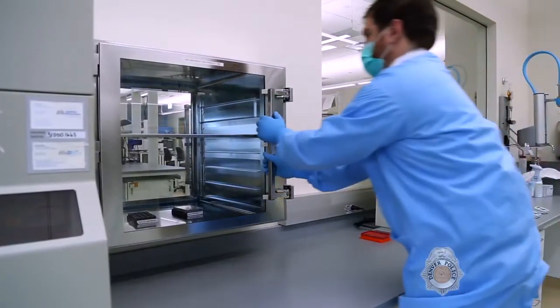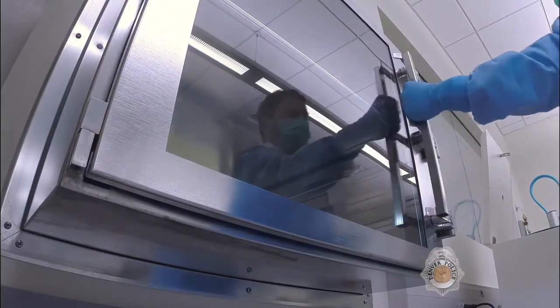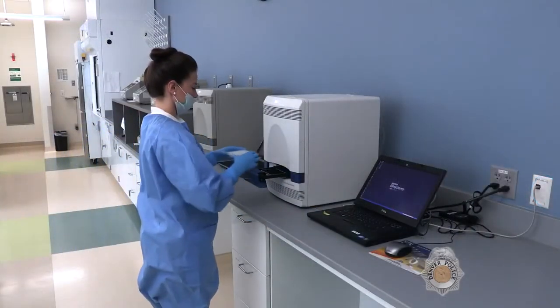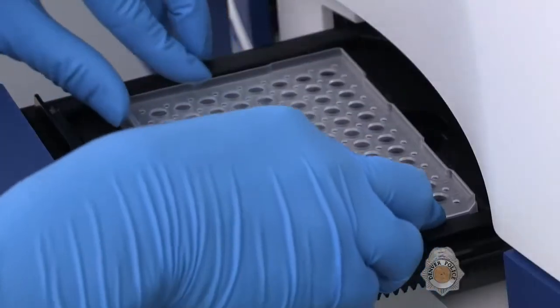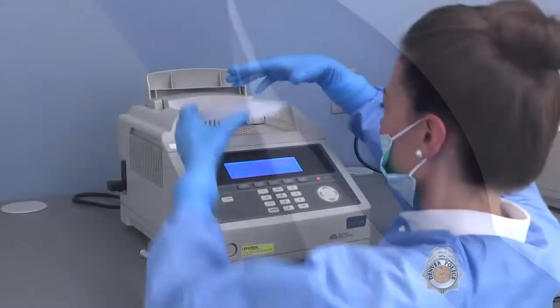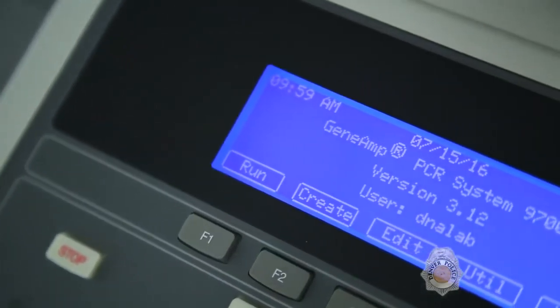After extraction, samples are passed through a secure chamber from the pre-amplification to the post-amplification laboratory. The next step is DNA quantitation, which determines how much DNA is present in each sample. That's followed by an amplification step, where the DNA is copied millions of times.